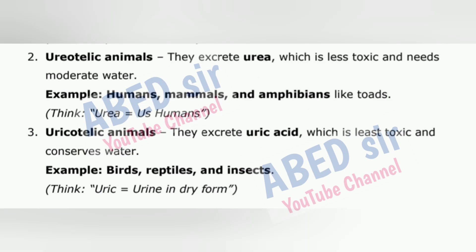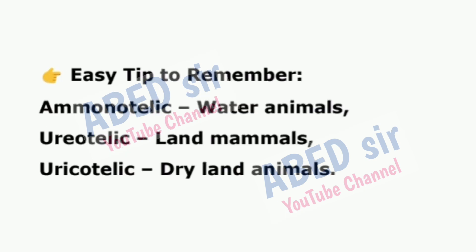2. Ureotelic animals — they excrete urea, which is less toxic and needs moderate water. Example: humans, mammals, and amphibians like toads. Think: urea equals us humans. 3. Uricotelic animals — they excrete uric acid, which is least toxic and conserves water. Example: birds, reptiles, and insects. Think: uric equals urine in dry form. Easy tip: Ammonotelic — water animals; Ureotelic — land mammals; Uricotelic — dry land animals.